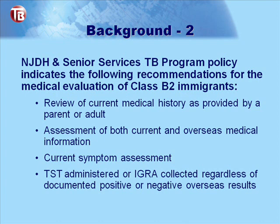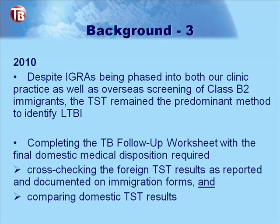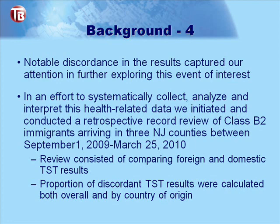In New Jersey, policy requests the following recommendations for a B-2 presenting at a health department or clinic: a review of current medical history provided by a parent or guardian, assessing both current and overseas medical information from immigration papers, a current symptom assessment, and regardless of TST or IGRA results overseas, New Jersey recommends re-administering the TST and re-collecting the IGRA for confirmation purposes. In 2010, despite IGRAs being phased into clinic practice, the TST remained the predominant method to identify LTBI. Completing the TB follow-up worksheet required cross-checking foreign TST results from immigration forms and comparing domestic TST results. A notable discordance was observed, which captured our attention.